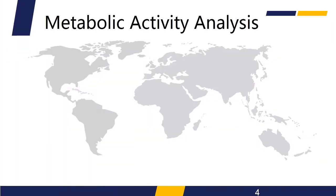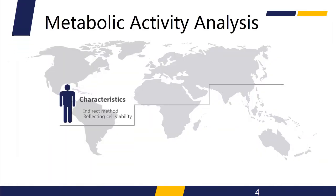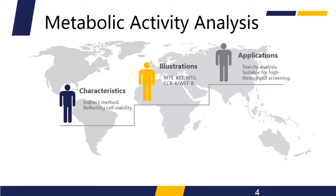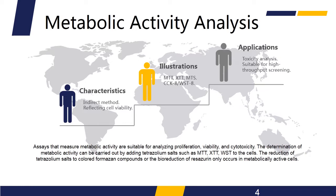Assays that measure metabolic activity are suitable for analyzing proliferation, viability, and cytotoxicity. The determination of metabolic activity can be carried out by adding tetrazolium salts such as MTT, XTT, and WST to the cells. The reduction of tetrazolium salts to colored formazan compounds, or the bioreduction of resazurin, only occurs in metabolically active cells. Actively proliferating cells increase their metabolic activity, while cells exposed to toxins will have decreased activity. It is an indirect method for detecting cell proliferation and is suitable for high-throughput screening.